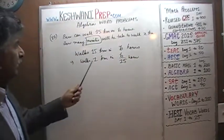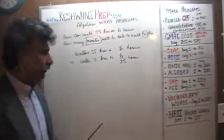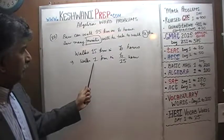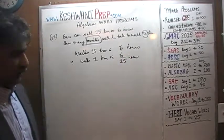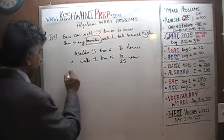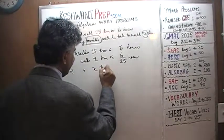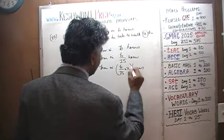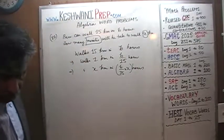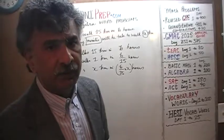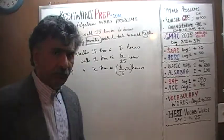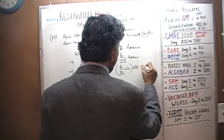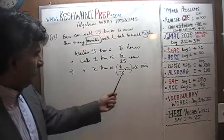But he doesn't want to walk 1 kilometer — he wants to walk X kilometers. So if 1 kilometer takes B over 15 hours, 2 kilometers will take twice as much, 3 kilometers will take 3 times as much, and X kilometers will take X times that amount. That implies he can walk X kilometers in B over 15 times X hours. But we are not interested in hours — the question asks how many minutes. So we just take the hours and convert them into minutes by multiplying by 60.